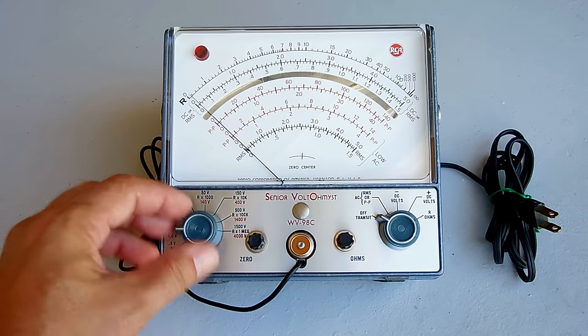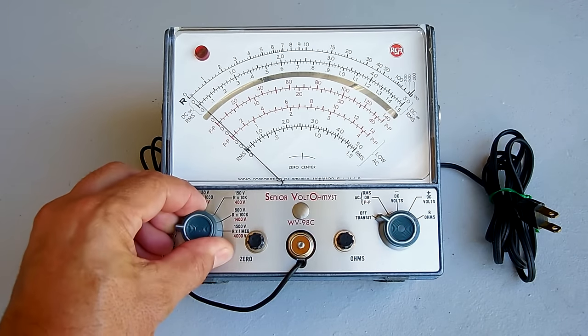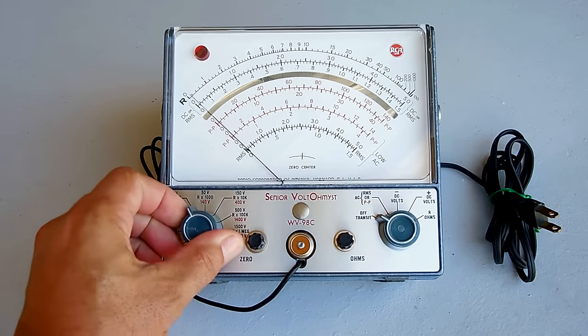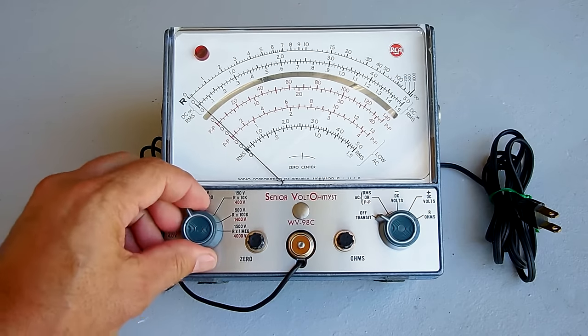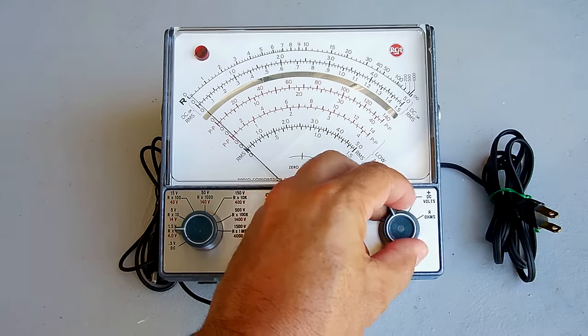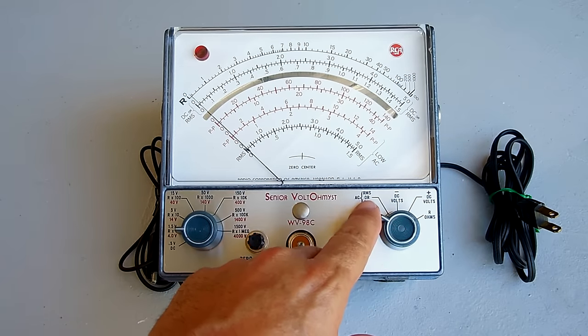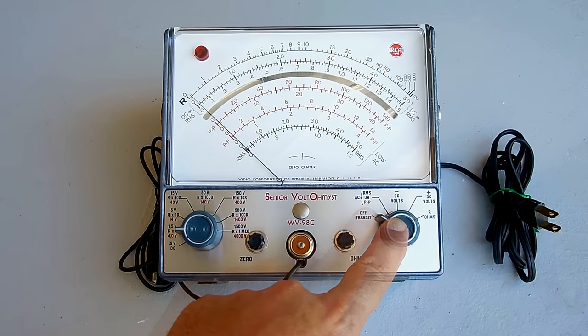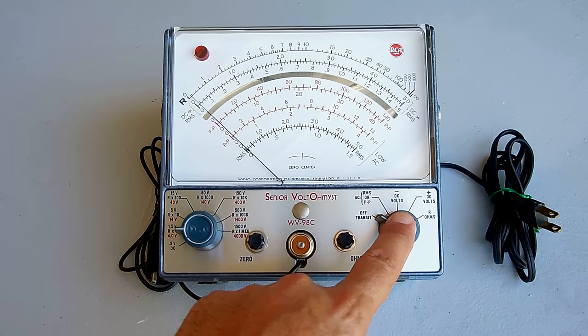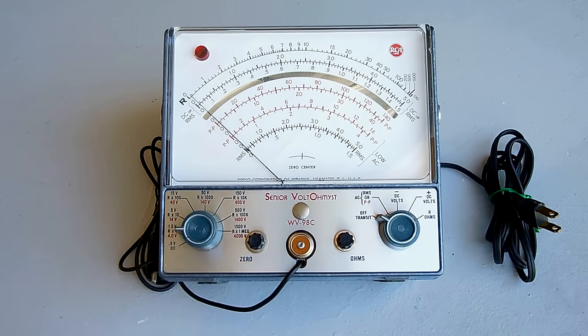The switches, everything about this unit is quality. It's not like things that are made today. The switches are so smooth, engage nicely. Same with this one here. You have the off position, AC RMS, which is the average AC voltage. You can also choose DC negative, DC positive, or the resistance setting.